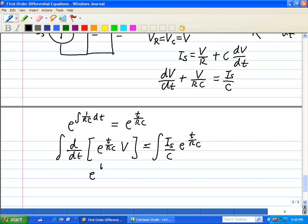Now we're going to integrate both sides of this equation. That leaves E to the T over RC times V on the left side, and on the right side is just IS times R, and integrating that, that's just RC E to the T over RC plus constant C1, our integration constant.